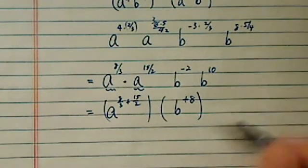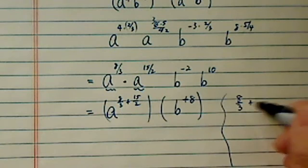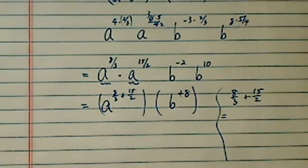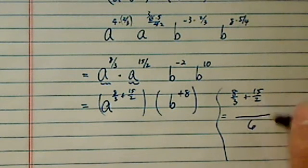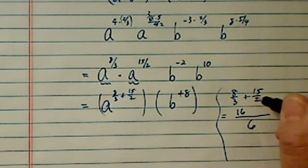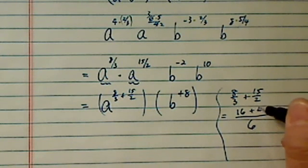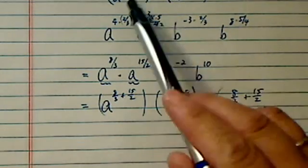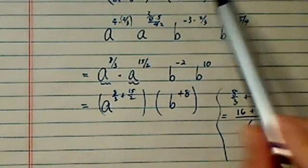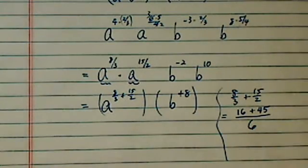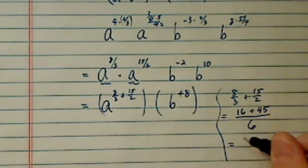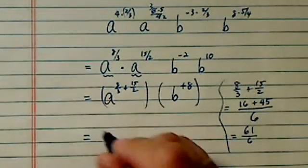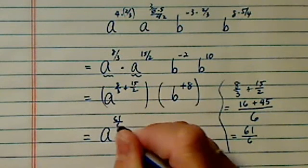Now on the side, just in case I get it wrong, I have 8 over 3 plus 15 over 2. So try this on a test — put your scratch paper right on the side so your teacher can follow it. I have 16, 2 times 8, and then 45 over there. So 16 and 45 — that's 30 over 4. So we have 61 over 6. Oh dear, it's not a pretty number. A to the 61 over 6.